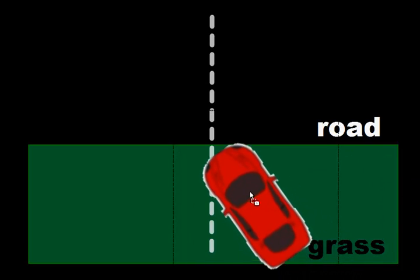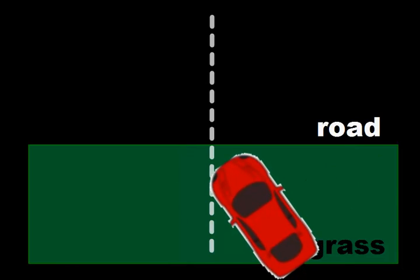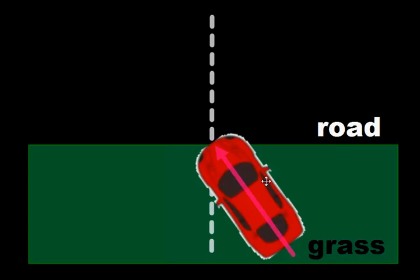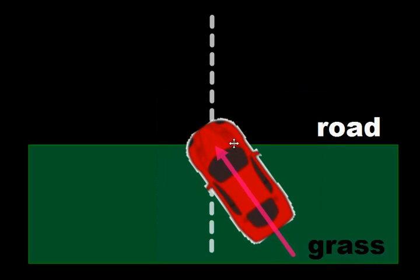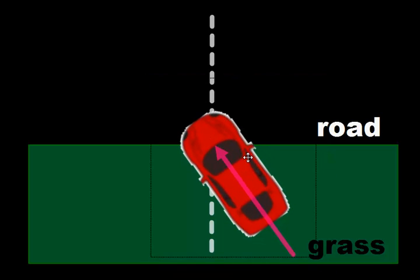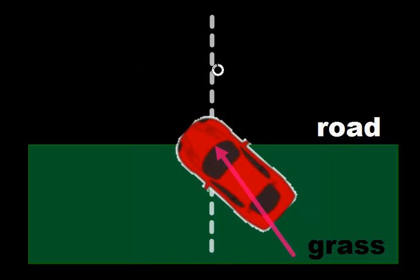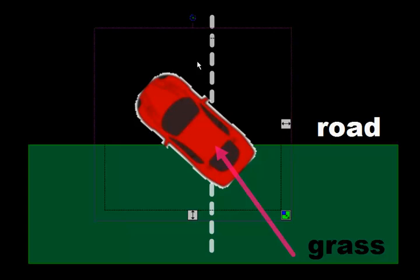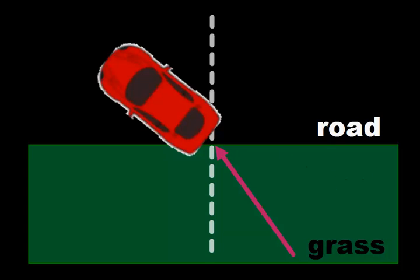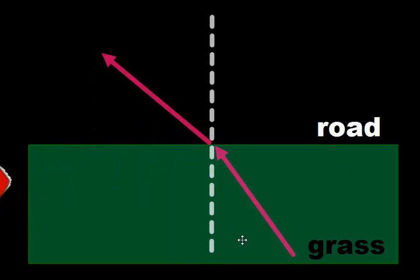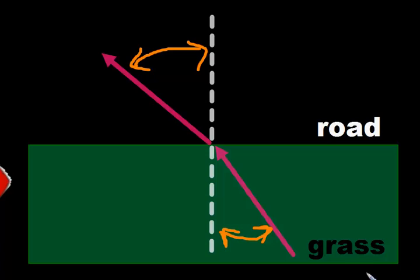You should also be able to do the same thing with the car going the other way — from grass back to road. The car is in the grass going slow, coming in at some angle. As it leaves the grass, the right tire exits first and speeds up, while the left side is still going slow. This makes the car turn outward. So going from slow to fast, the car turns away from the normal — a bigger angle with the normal.